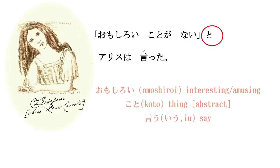It's kind of like a quotation mark that you can hear. We use the square quotation marks in Japanese, which are the equivalent to English quotation marks, but we also use the to. So we don't just say, nothing interesting is happening, Alice said. We say, nothing interesting is happening, to, Alice said. Now, to is a very interesting particle structurally, and we're going to look into that a little more deeply in a few minutes.